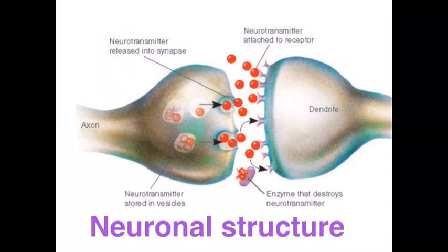We get an action potential which will potentially hit one of the vesicles — the storage site for neurotransmitters in the axon terminals — and this will trigger a release of neurotransmitters, which are the messengers, into the synapse. Some of these will bind with the specialized receptors on the dendrites of the postsynaptic neuron.